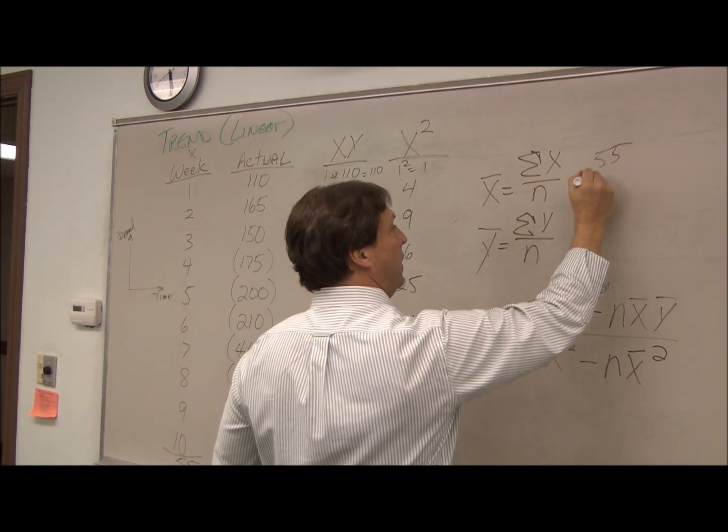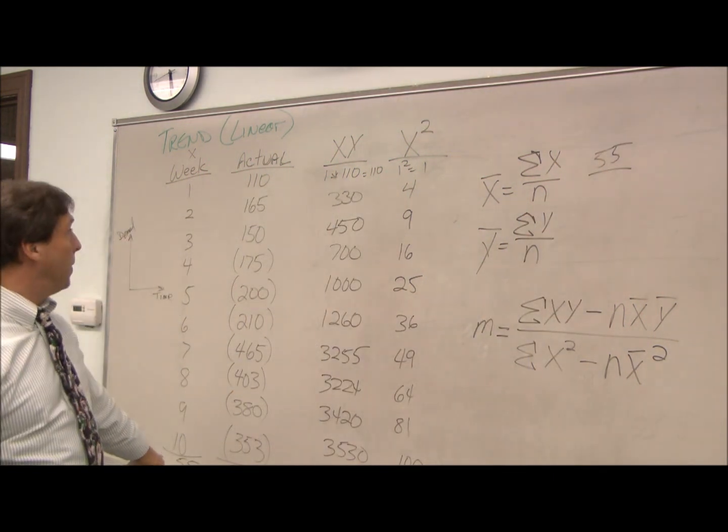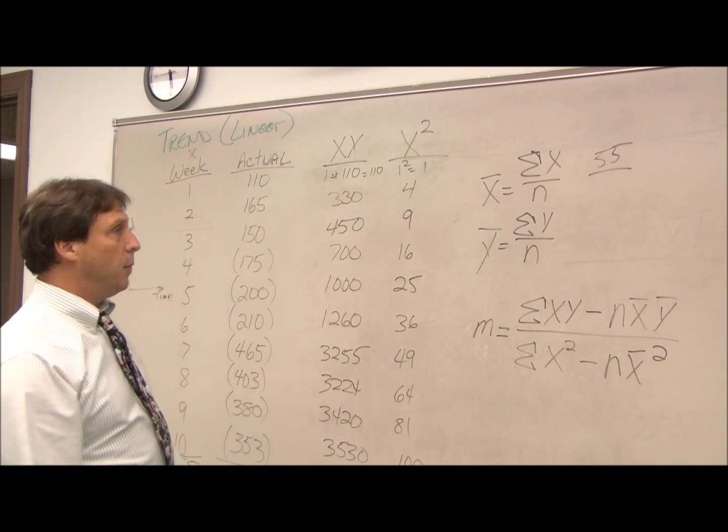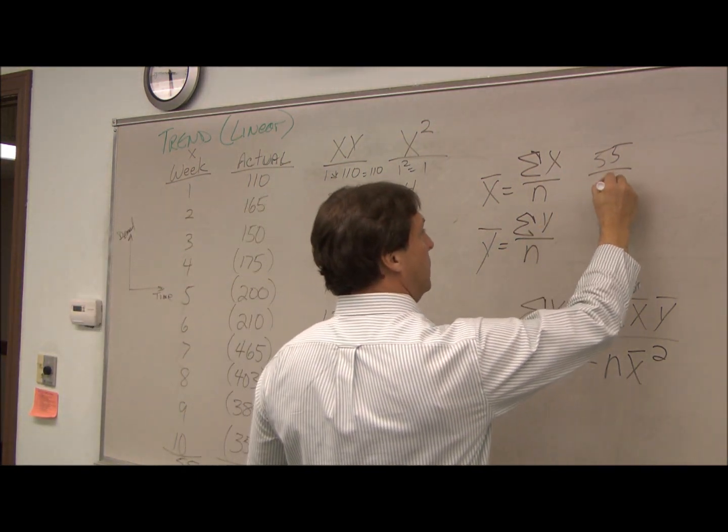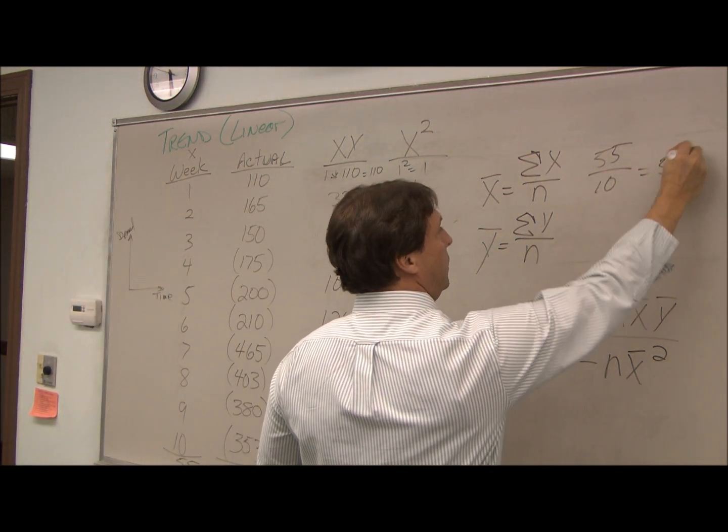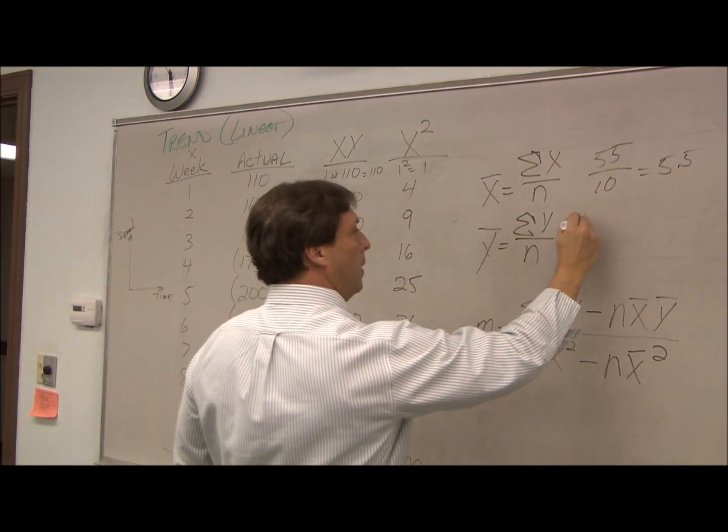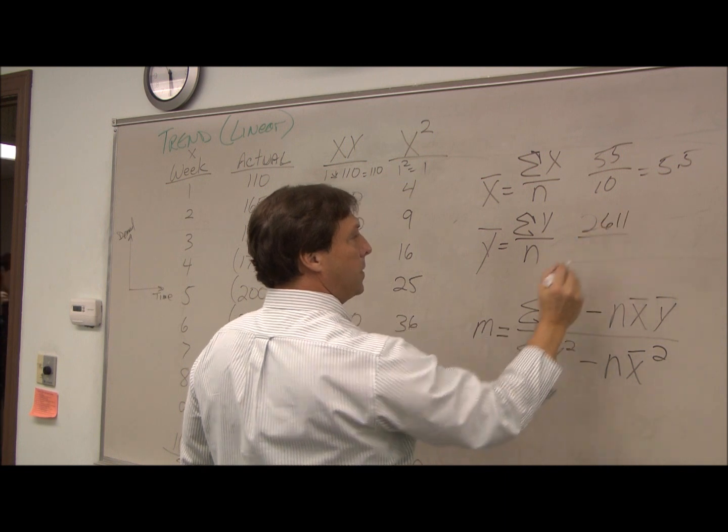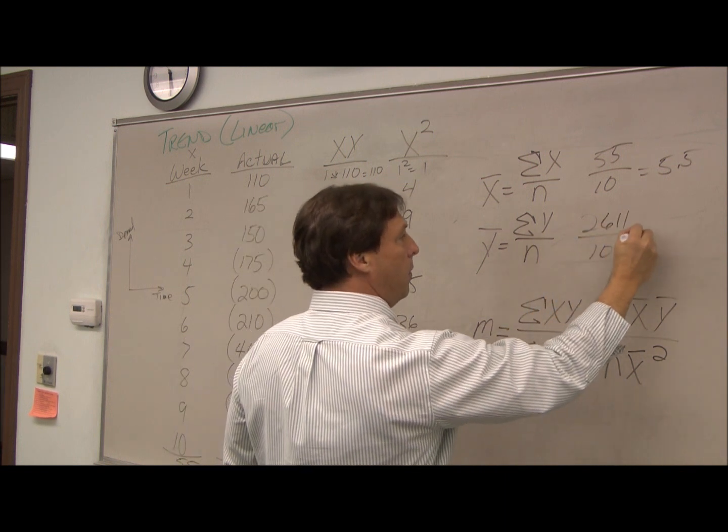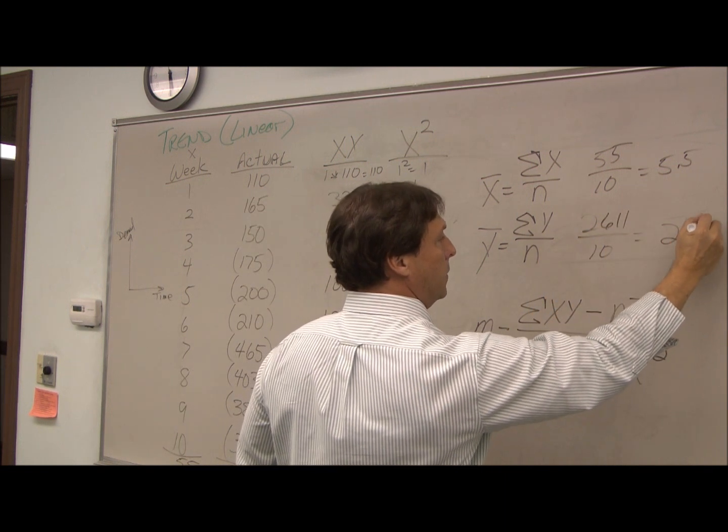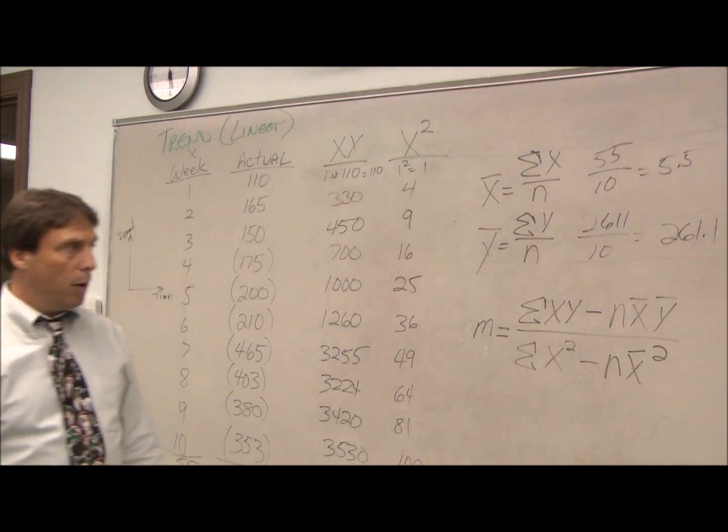So we have 55 as the sum of our weeks. We went for 10 weeks. Our average is 5.5. We do the same thing for y. 2,611 is our summation. We went for 10 weeks. Our average is 261.1.